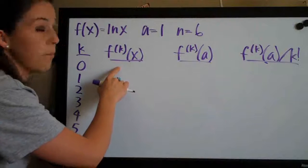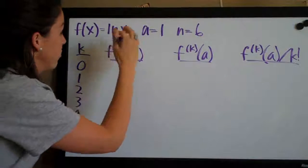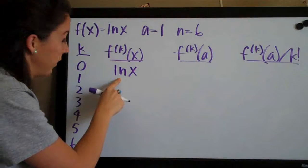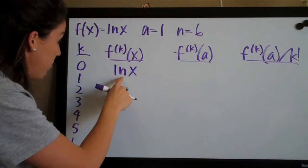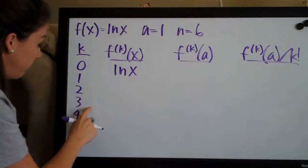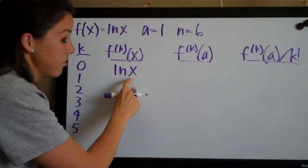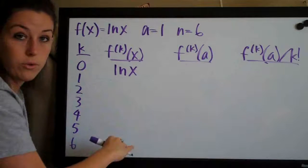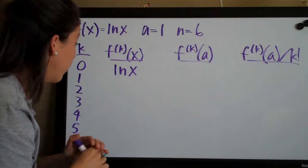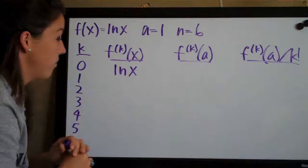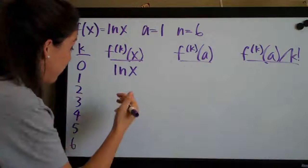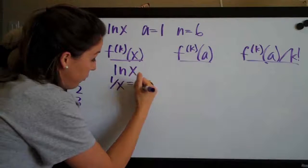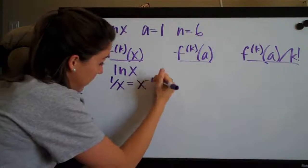Then for the second column we always write the original function in the first row. So in this case ln or the natural log of x goes in the first row. Then each subsequent row, 1, 2, 3, 4, 5, 6, we're going to take the derivative of this function and then again and then again and then again until we get to the bottom and that's what goes in the second column. So in our case the derivative of ln of x is 1 over x which is also equal to x to the negative 1, right?